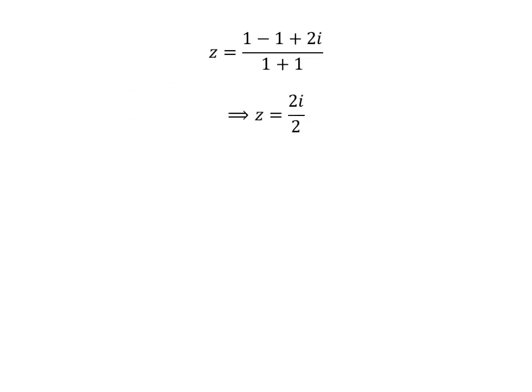Further simplification gives us z = 2i/2. Canceling the common factor 2 in the numerator and denominator gives us z = i.